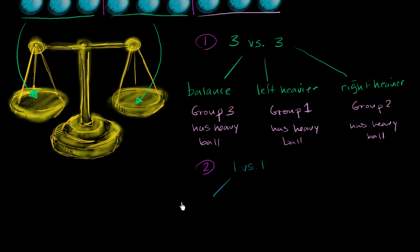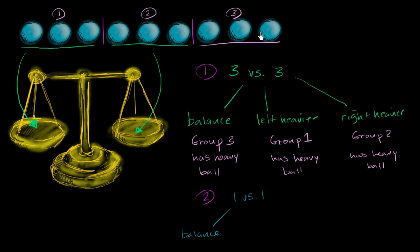If we're taking this group of three, we're in the balanced situation from the first weighing. So if we put this ball here and this ball here, if they are balanced, then we know that this must be the heavy ball, because these two are the same.